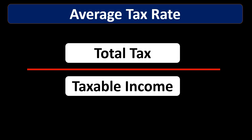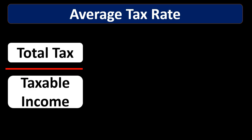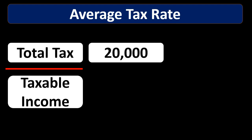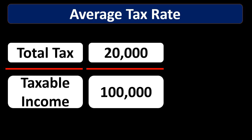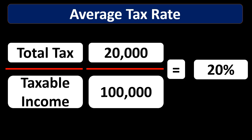Once we have the taxable income, we take total taxes divided by taxable income to get the average tax rate. For example, if we paid $20,000 in taxes and divide that by $100,000 in taxable income, we get an average tax rate of 20%. That 20% is an average, which means in a progressive tax system we're paying some rates below that and some above it — some of the $100,000 at a rate lower than 20%, and some at a rate higher than 20%. An average simplifies that complexity, and it's useful for comparing what you pay versus what someone else pays.